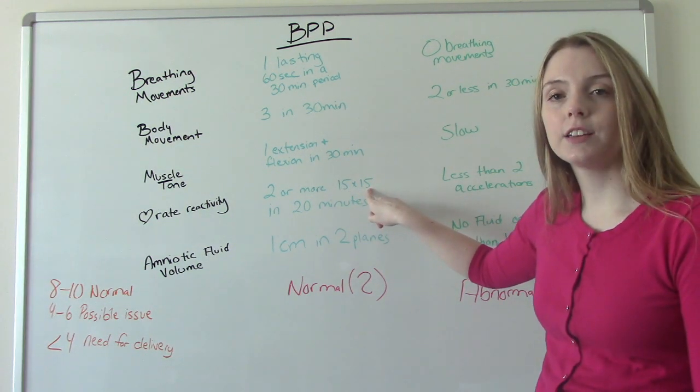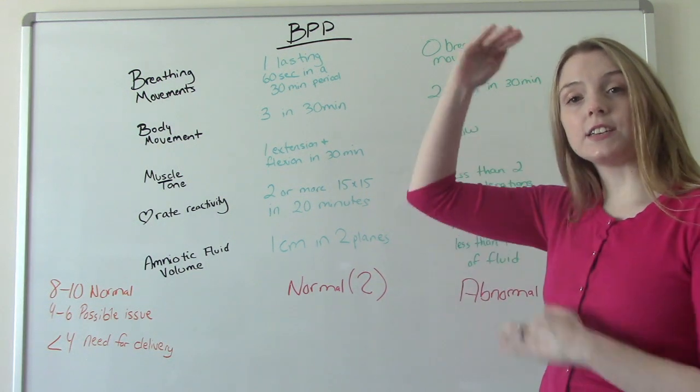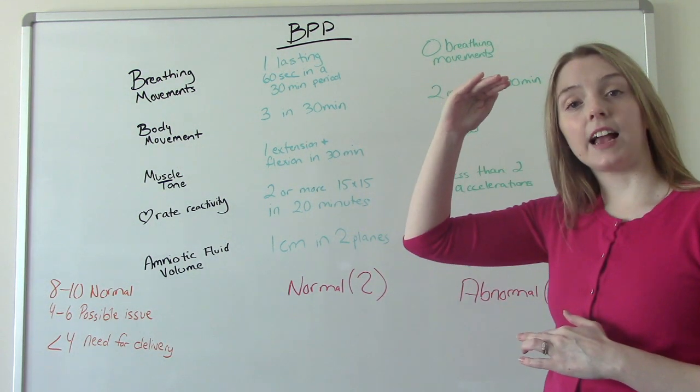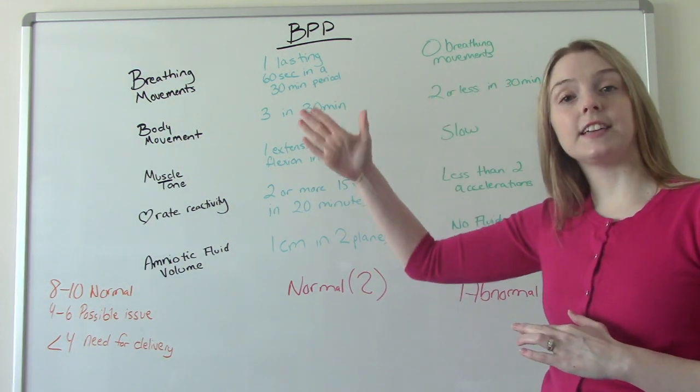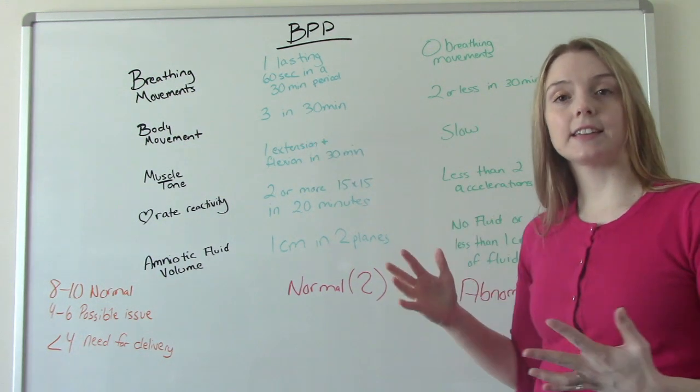So we need to have two or more what we call 15 by 15. These are accelerations. So the heart rate goes 15 above the baseline and that lasts for 15 seconds or longer. That's an acceleration.